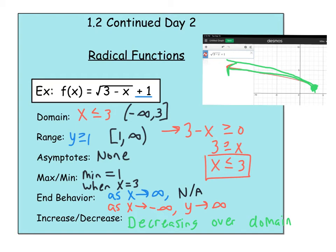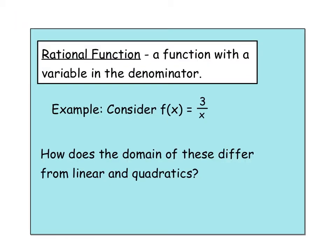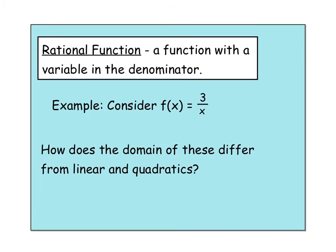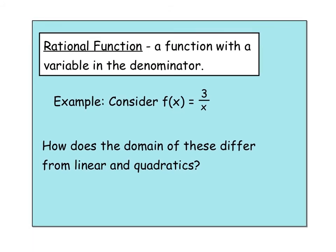Negatives under a square root — that's how we found the domain in that previous example, because negatives under a square root are undefined; they're not real numbers. Now let's look at one other type of function: rational functions. Rational functions are ones where you have a variable in the denominator, and this opens up a new issue with the domain. We had excluded values because of the rule that you cannot divide something by zero.